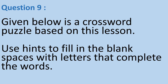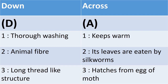Question 9: Given below is a crossword puzzle based on this lesson. Use the hints to fill in the blank spaces. The hints are: Down — 1D: thorough washing, 2D: animal fiber, 3D: long thread-like structure. Across — 1A: keeps warm, 2A: its leaves are eaten by silkworms, 3A: hatches from egg of moth.